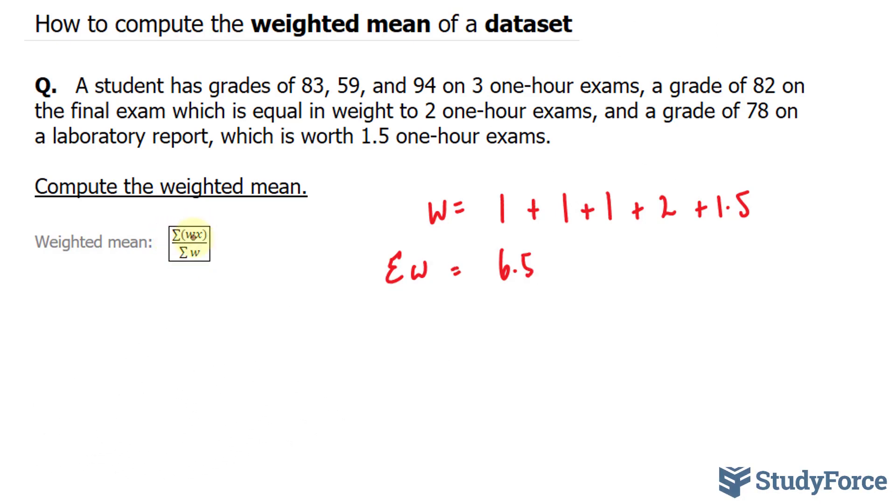The top part tells us that we have to take each of these grades and multiply it by its weight. So for this part, we'll take 1 times 83, plus 1 times 59, plus 1 times 94.